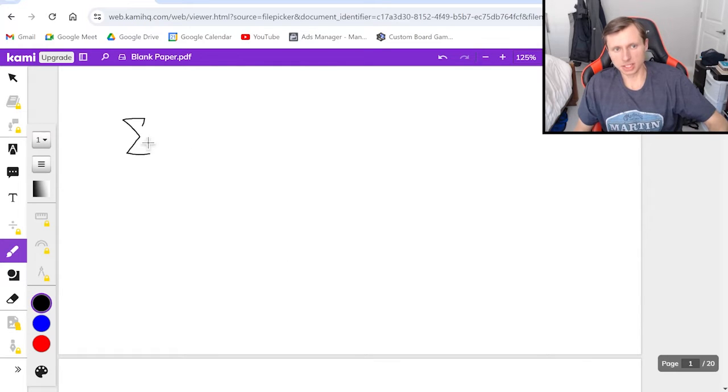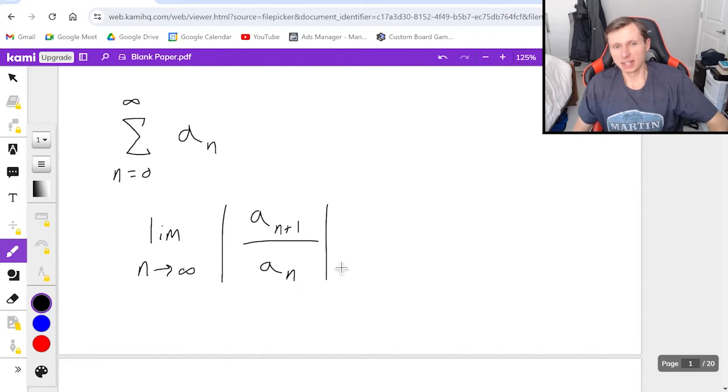So assuming you start with some series a sub n and it doesn't matter where you're starting from, like you can start from zero or whatever, then the ratio test says take the limit as n goes to infinity of the absolute value of a sub n plus 1 divided by a sub n. Now what does this mean n plus 1? Well let me show you.